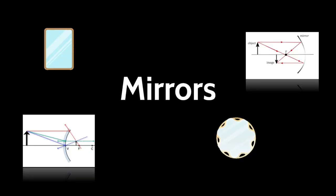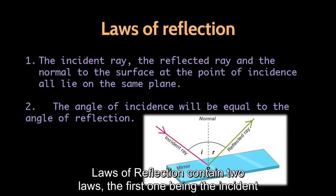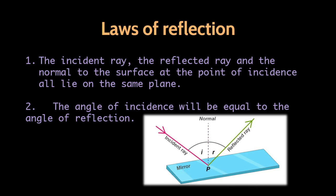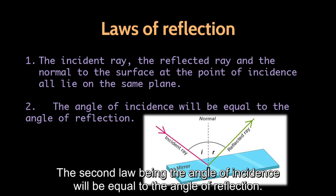Mirrors. Laws of reflection contain two laws. The first being that the incident ray, the reflected ray, and the normal ray all lie on the same plane. The second law being that the angle of incidence will be equal to the angle of reflection.